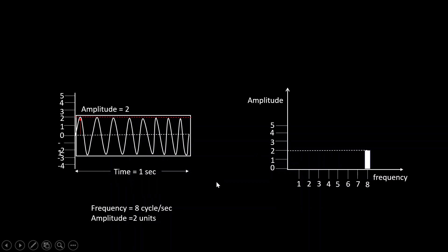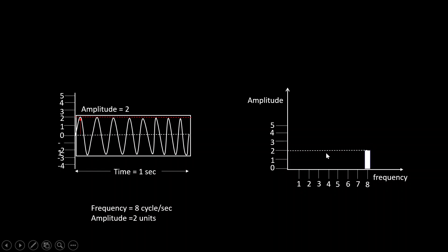Similarly, I have another sine wave with a frequency of 8 cycles per second and an amplitude of 2 units. This can be represented on the amplitude-frequency graph: at a frequency of 8 units the amplitude is 2 units.